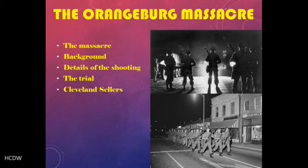On February 8th, 1968 at about 10:30 at night, a spate of police gunfire lasting no more than 10 seconds left three young black men dead and 27 others wounded in Orangeburg, South Carolina on the campus of South Carolina State College. The Orangeburg Massacre is an often overlooked event of early 1968, though historians in recent years have attempted to revive the memory of those who lost their lives: Samuel Hammond, Delano Middleton, and Henry Smith, and the others who were wounded and scarred in this horrible attack.